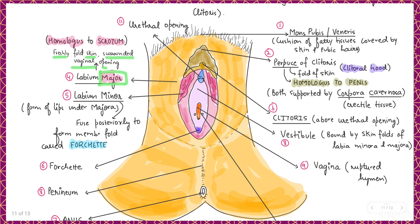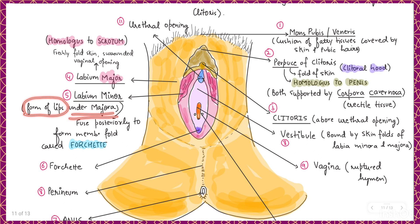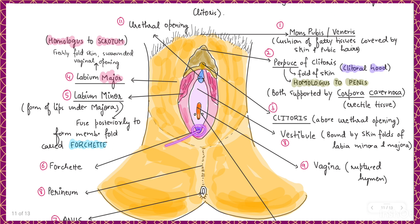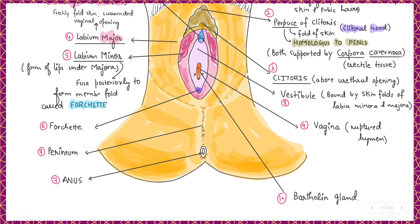The next portion of the vulva is called the labium minus, present in a pair, so we call it the labia minora. These are lip-like folds formed under the labia majora. The labia minora fuses posteriorly, and this point of fusion is called the fourchette.